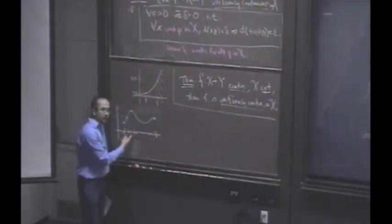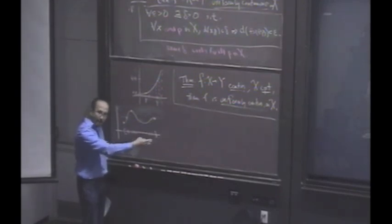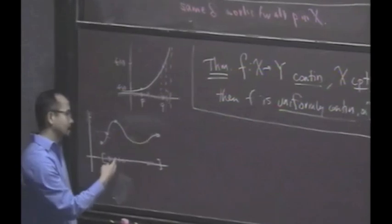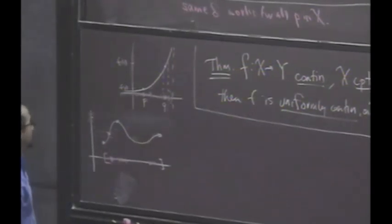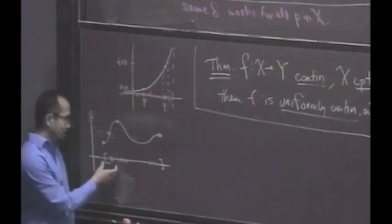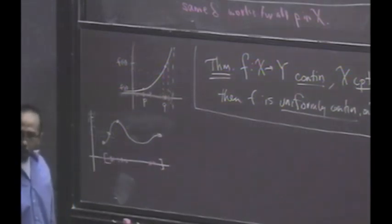Those delta balls form a cover, an open cover of this set, which is compact. Therefore, there is a finite subcover. Okay, and so then what? If you have the delta balls that cover, does that guarantee anything? No. So you have to be a little careful.